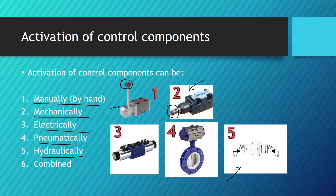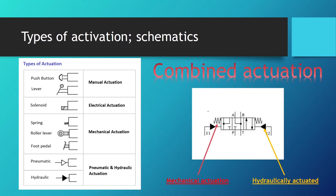Pneumatically and hydraulically activated valves are also called pilot activated — we use the fluid from the system to activate the valve. A combined actuation means a valve has two or more types of actuation, such as springs (mechanical) combined with hydraulic actuating. Those are called combined actuation valves.